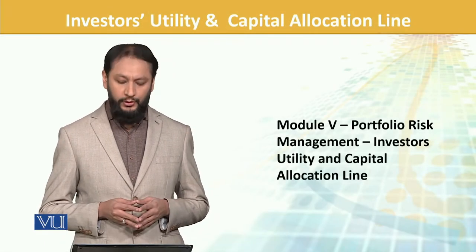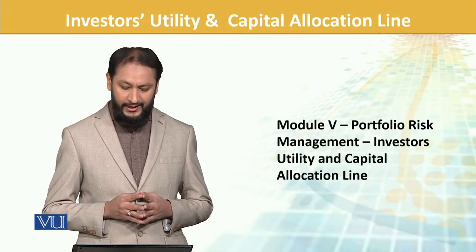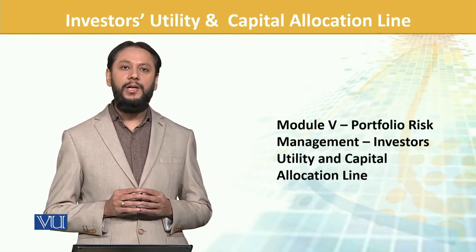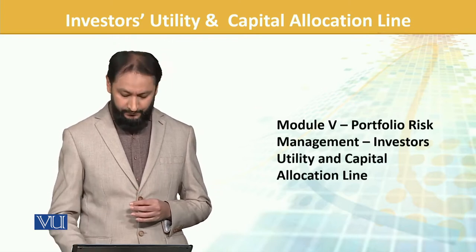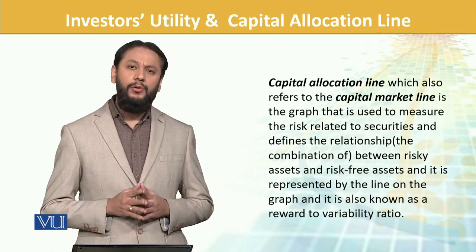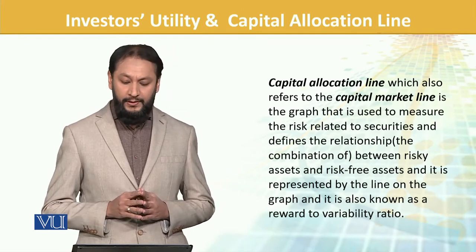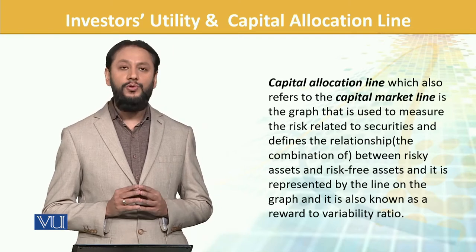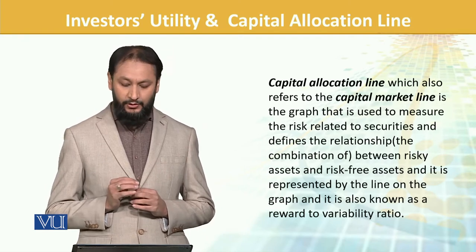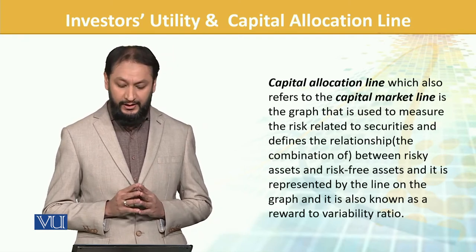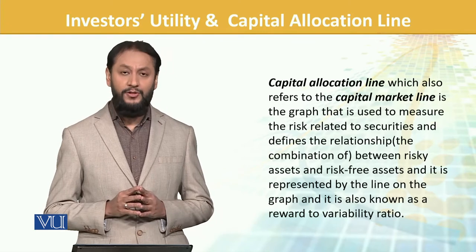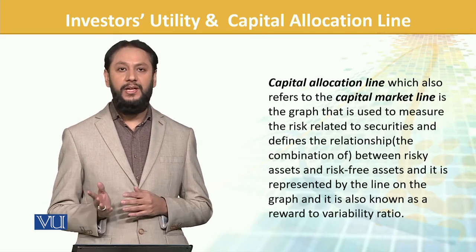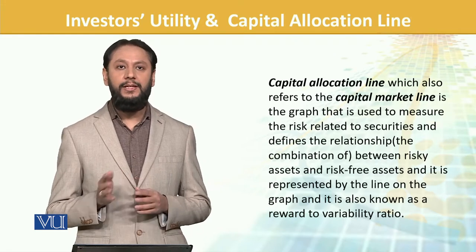Bismillahirrahmanir. We are doing portfolio risk management. Today we will talk about investor utility and capital allocation line. The capital allocation line, also known as the capital market line, is the graph used to measure risk related to securities and define the relationship and combination of both risky as well as risk-free assets.